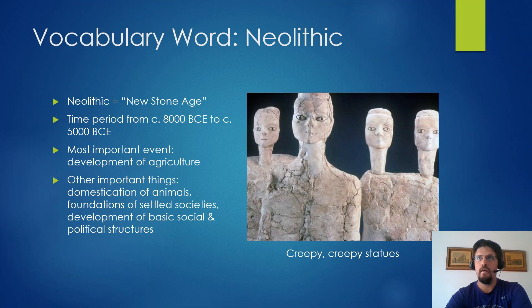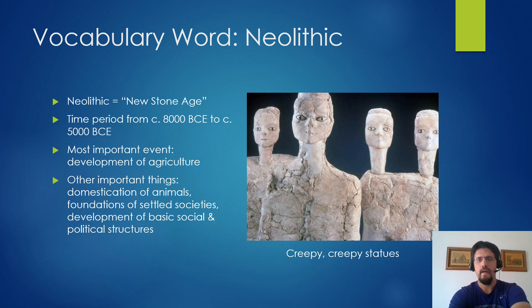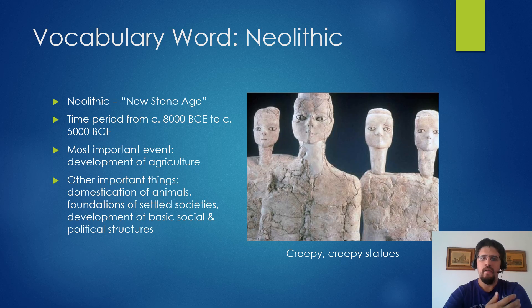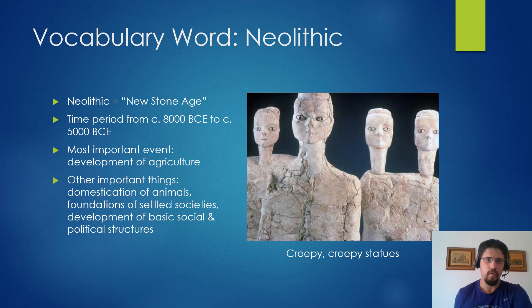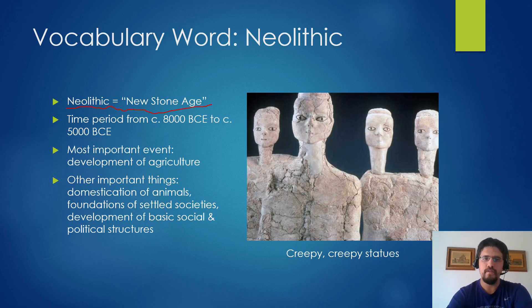Right from the get-go we're looking at a new time period. We are looking at today the Neolithic time period, which runs from roughly 8,000 BCE to 5,000 BCE. Again, this is not American history — dates are nowhere near as specific or important, especially in early world history. You just need to know that the Neolithic came after the Paleolithic, and if you know what Neolithic means — which is 'new stone age' — that really shouldn't come as a surprise.